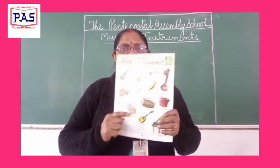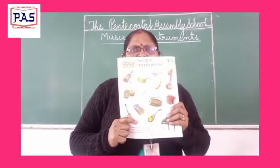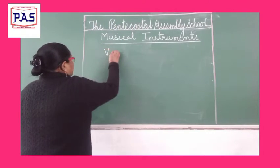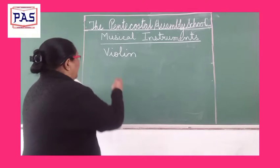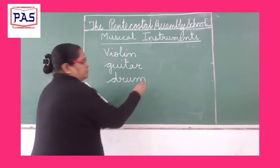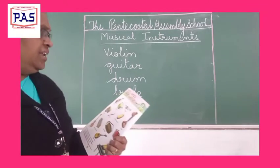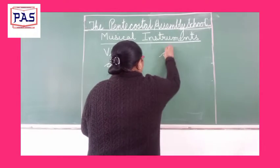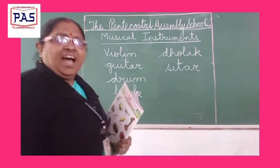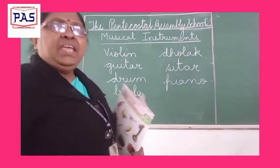Open your GK book to page number 30. You can see there are many musical instruments in your book like violin, guitar, drum, bugle, yugar, dhola, sitar, and piano.